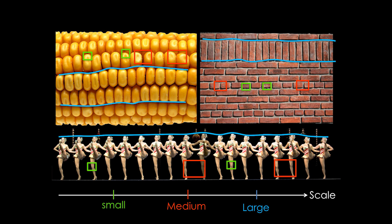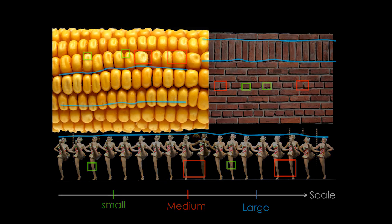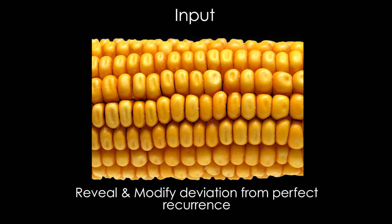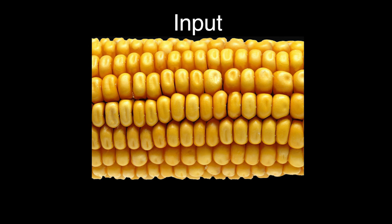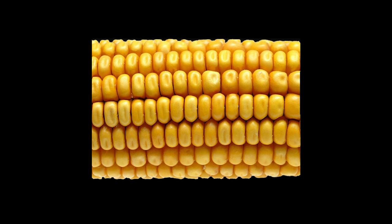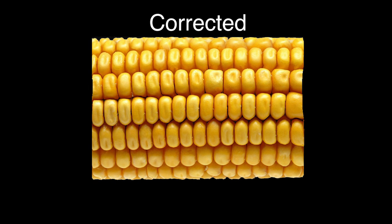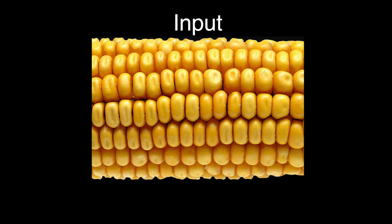In this work, we show how from just a single image as input, we can automatically reveal and modify these various deviations from perfect recurrence. Using our method, we can automatically reduce the variations between similar structures, thus producing an idealized version of the input image that has stronger repetitions.